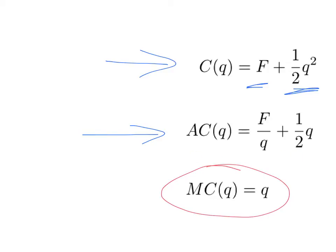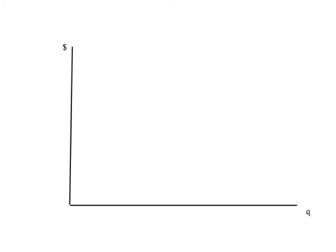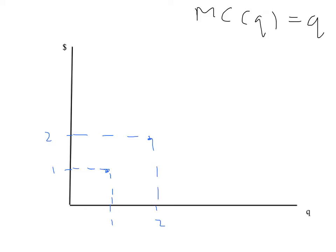Let's draw this technology on these axes — dollars on the vertical axis and quantity on the horizontal axis. Starting with marginal cost: MC equals Q, so at a quantity of 1, marginal cost is 1; at a quantity of 2, marginal cost is 2. If we join up all those points, we get the marginal cost curve — simply a line with slope equal to 1, where the angle is 45 degrees.